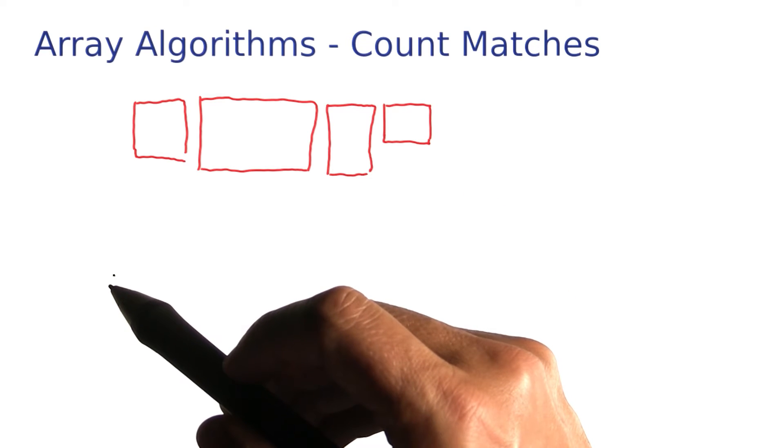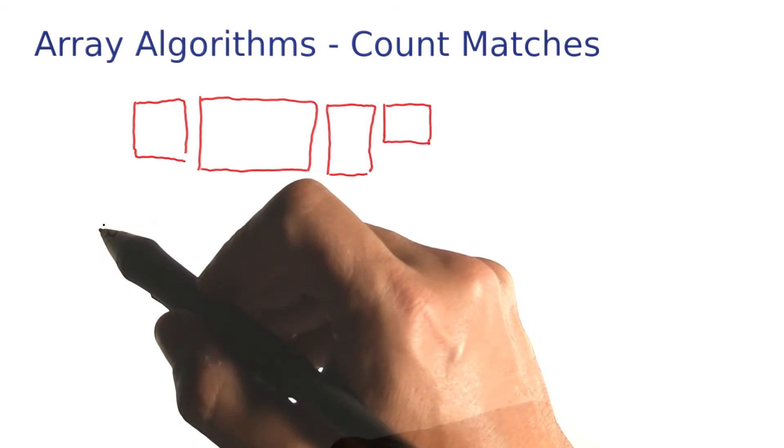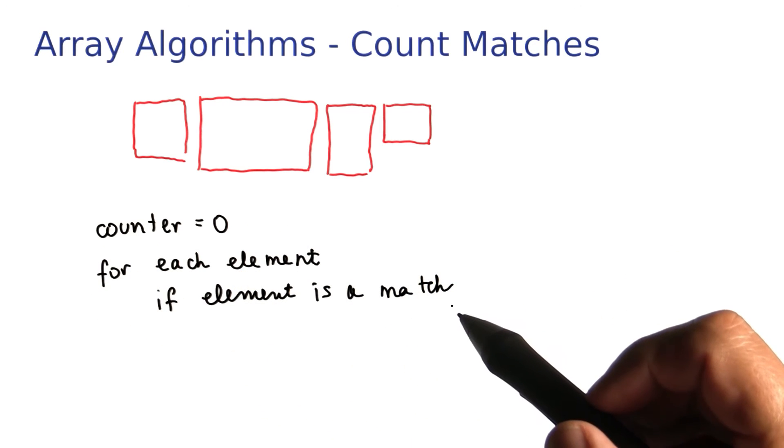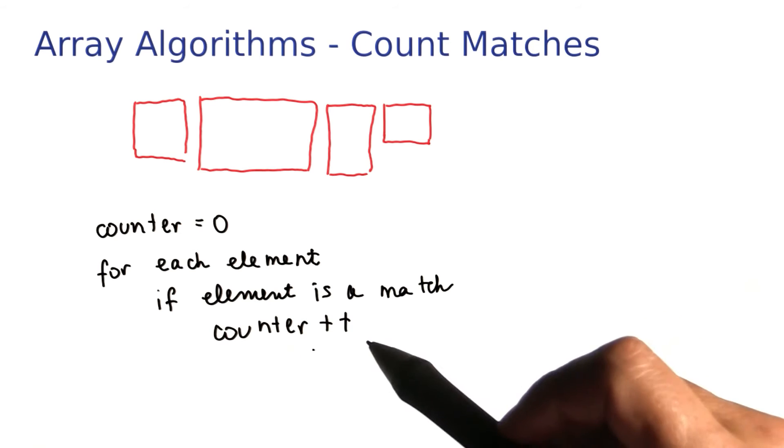That's an example of a counting problem. In general, you keep a counter. You visit each element. If the element is a match for whatever it is that you're looking for, you increment the counter.